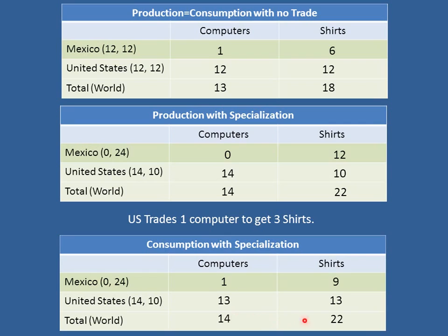Total production is the same, but notice what has happened to consumption with specialization and trade compared to when there was no trade. When there was no trade, Mexico consumed one computer and six shirts; now they're consuming one computer and nine shirts — Mexico is better off by three shirts. The United States was consuming 12 computers and 12 shirts; now they're consuming 13 of each. The United States is better off by one computer and one shirt. Pretty remarkable — trade according to comparative advantage has made both countries better off.